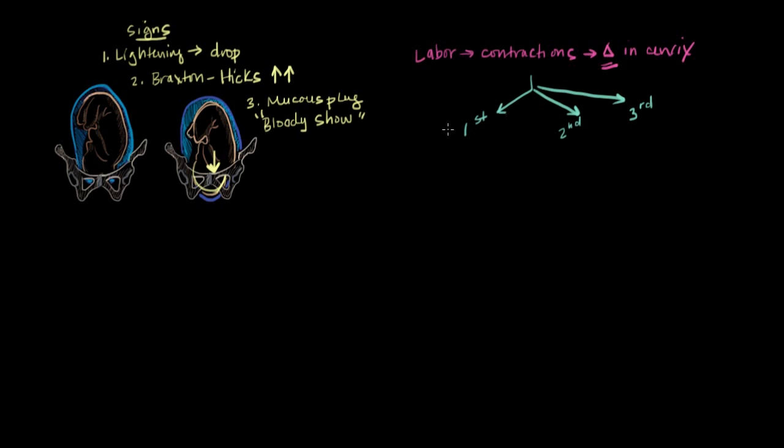Starting with the first stage of labor, which is the longest stage. The first stage of labor is all about the cervix becoming fully dilated, which means the cervix goes from being thick and completely shut to thinning out and opening up 10 centimeters. That's a lot of change, so it doesn't happen all at once. Instead, it happens in three distinct phases.